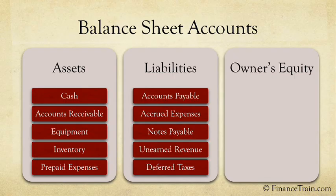Accounts payable refers to the money that a business owes to other businesses or individuals. Notes payable is the money that a business promises to pay at a future date, and unearned revenue is the money received in advance.